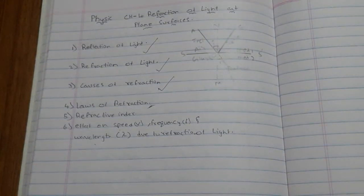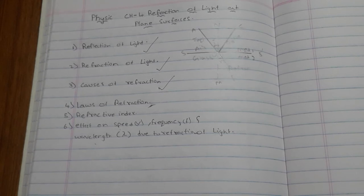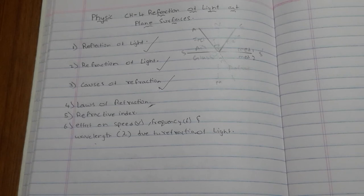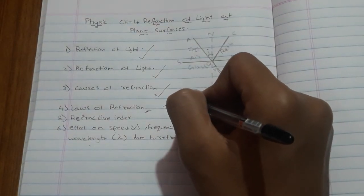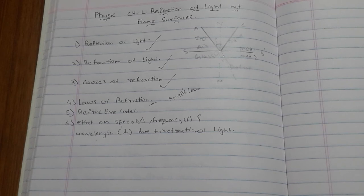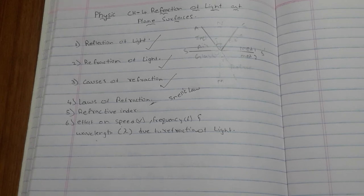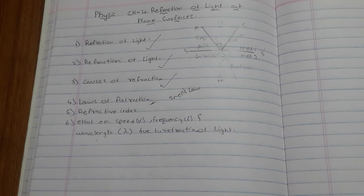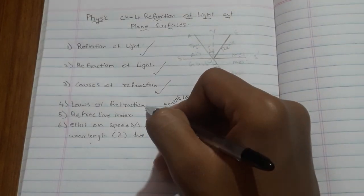What are the main laws of refraction? A Dutch scientist named Willebrord Snell introduced the laws of refraction, also called Snell's laws. There are two laws: first, the incident ray, the refracted ray, and the normal at the point of incidence all lie in the same plane. Second, the ratio of the sine of the angle of incidence to the sine of the angle of refraction is constant for a given pair of media.